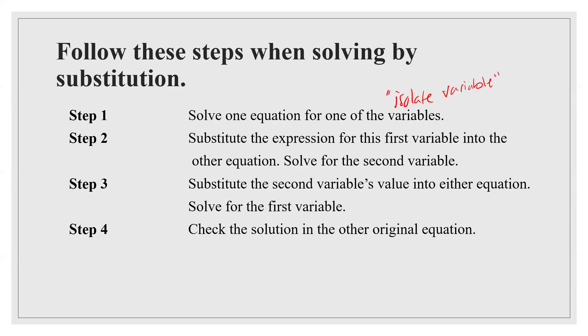Step two is to substitute the expression for the first variable — that's our first step of substitution. Step three, we're going to substitute again, but this time it's back into the original. Step four is always to check. So our four steps are: isolate, substitute, substitute, and check. Those are your four steps.